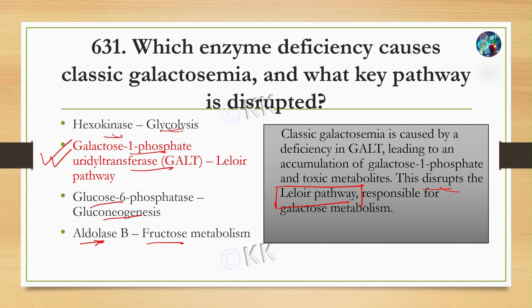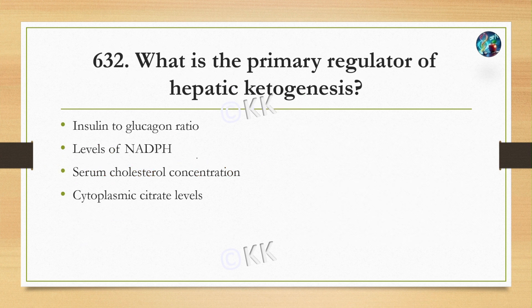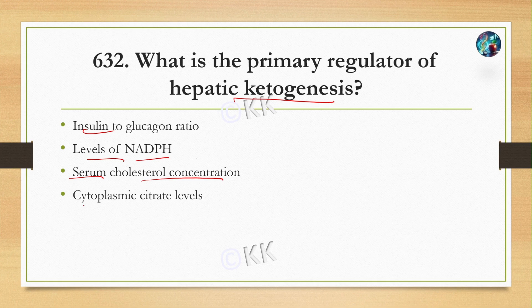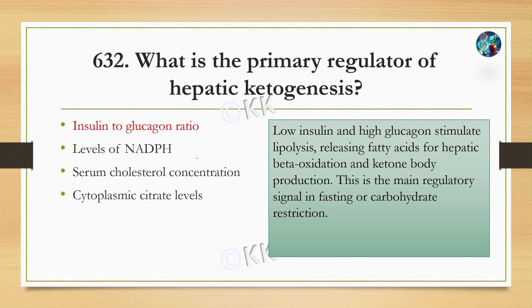The next question: what is the primary regulator of hepatic ketogenesis? Option A: insulin to glucagon ratio. Option B: levels of NADPH. Option C: serum cholesterol concentration. Option D: cytoplasmic citrate level. The correct answer is option A: insulin to glucagon ratio.